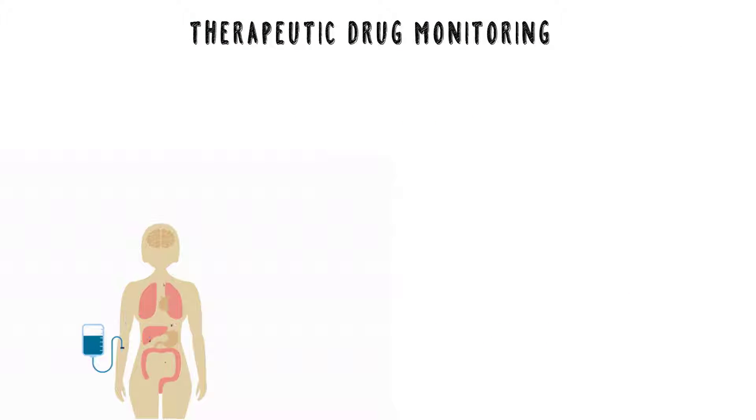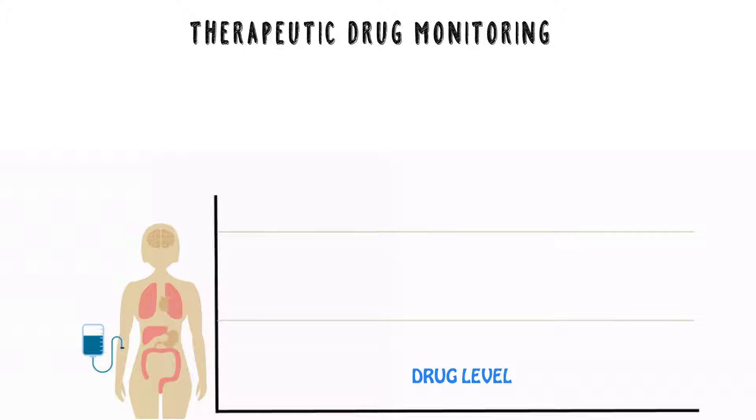As you can imagine, when you get an intravenous medication, you're getting a large amount of the drug, and then it's being used up by your body. It's being metabolized or broken down, or it's excreted, and then the level of that drug drops. That is what we mean when we say a drug level.